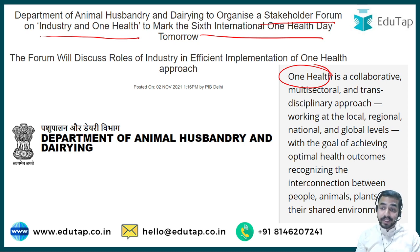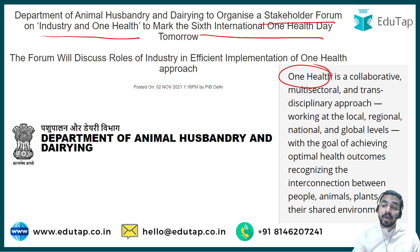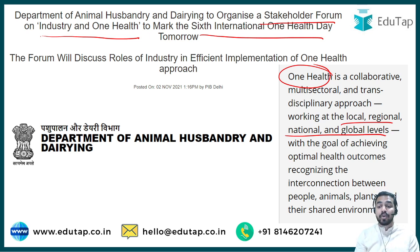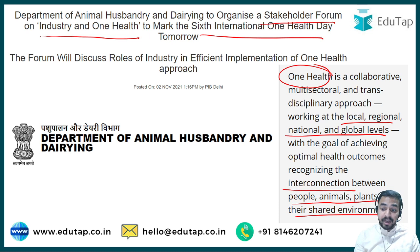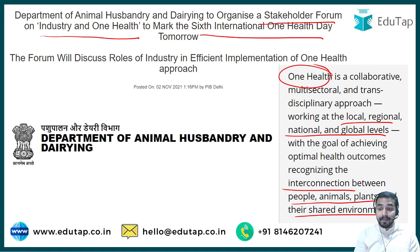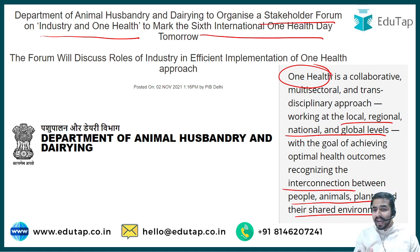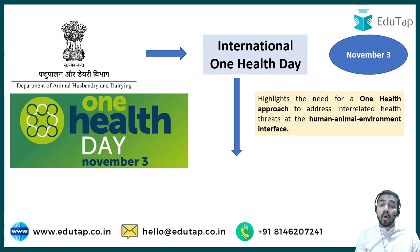One Health is a concept in which there is a collaborative, multi-sectoral, and transdisciplinary approach, working at the local, regional, national, and global levels with the goal of achieving optimal health outcomes, recognizing the interconnection between people, animals, plants, and their shared environment. Various kinds of species live in our environment — people, animals, plants — and with the help of this One Health concept we are aiming to establish a balanced and interdependent environment.